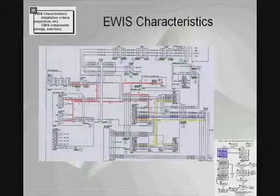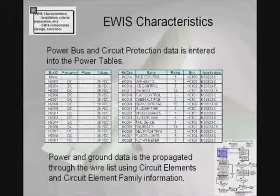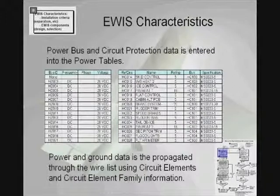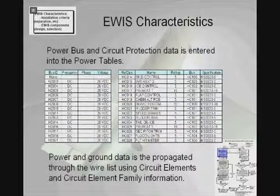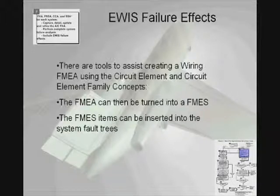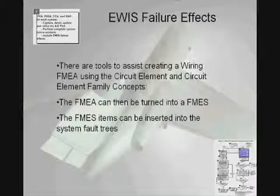By propagating all this information through the wiring system, the EWIS RAT is able to determine system effects and propagate wire failure information through the EWIS. There are tools to assist creating a wire FMEA using circuit element and circuit element family concepts. The FMEA can then be turned into an FMES, and the FMES items can be inserted directly into system fault trees. The EWIS RAT provides a methodology to directly do this.